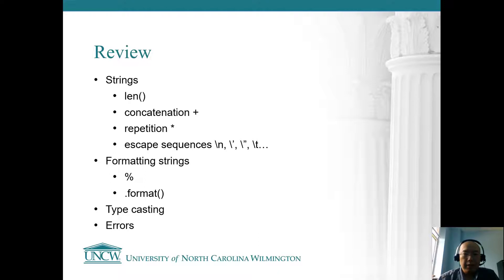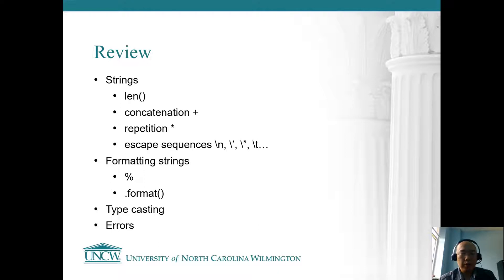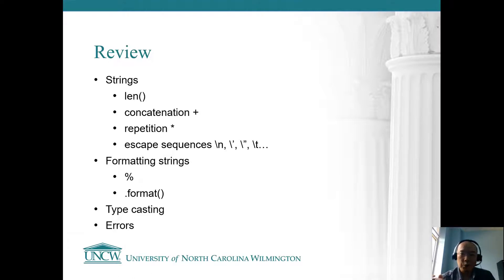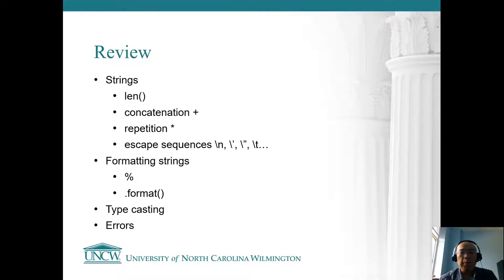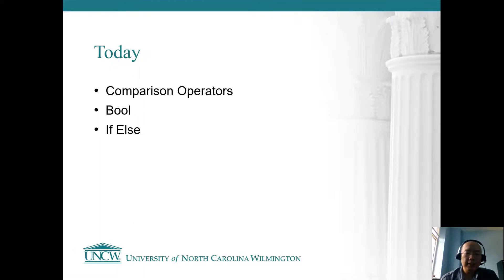For typecasting you can force one data type to be another, but you can't always rely on that. For example, 44 as a string converts fine, but combining "UU" with 44 — I can't really cast that into an integer. We also talked about different types of errors and you really need to get used to reading error messages to figure out issues in your code. Today we are going to see comparison operators, boolean values, and if/else statements.